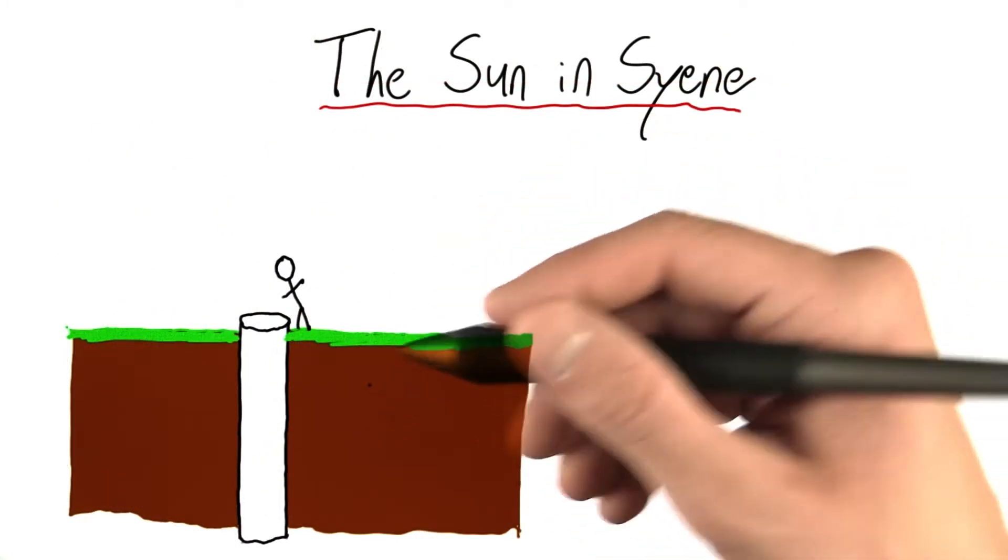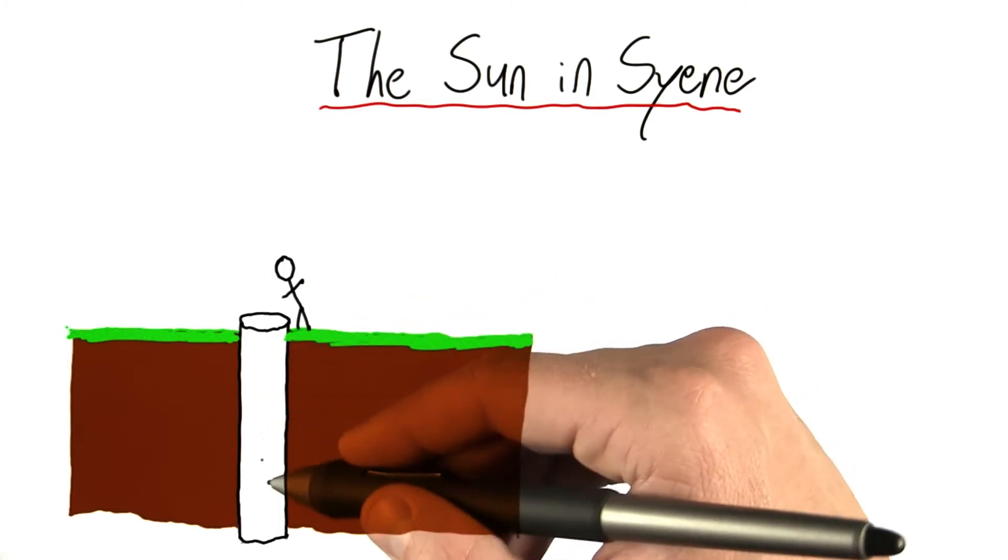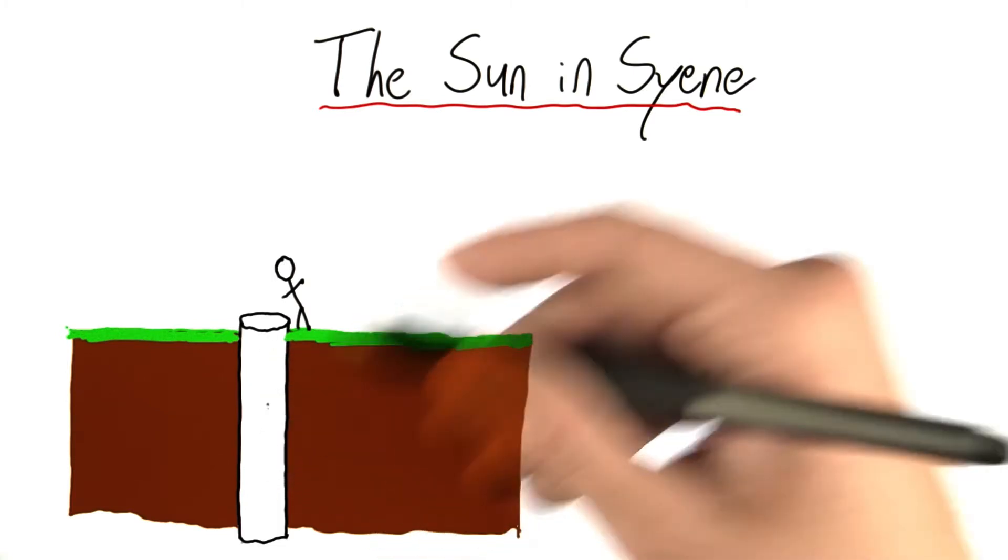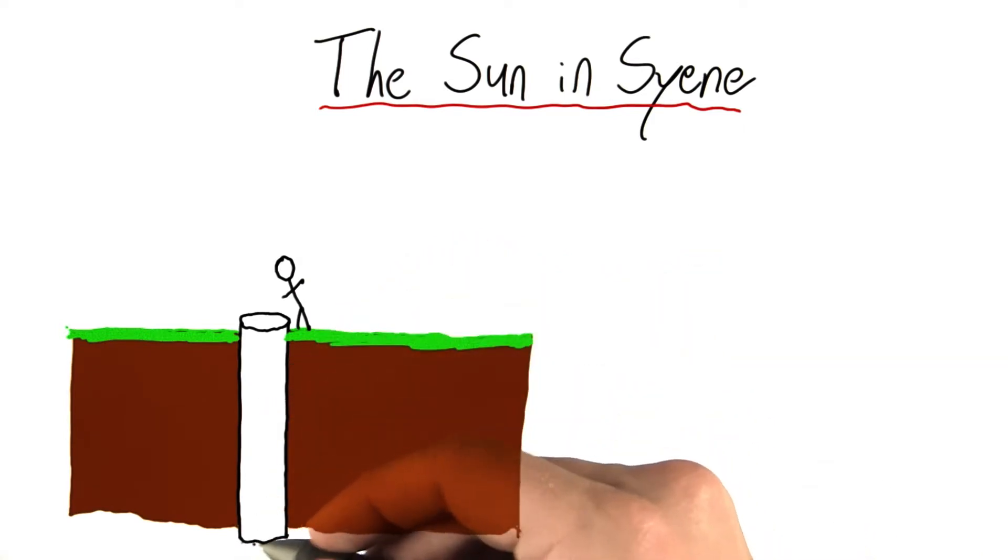Eratosthenes had come to this conclusion by hearing that if you look down a well, not necessarily a poorly drawn well, but a well in Syene on the summer solstice, you could see the very bottom.